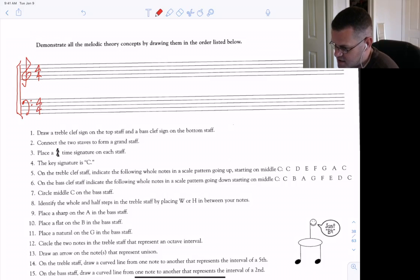The key signature is C, so we just leave it alone. On the treble clef staff, indicate the following whole notes in a scale pattern going up, starting on middle C. Start on middle C here. And then whole notes, scale pattern: D, E, F, G, A, B, C.